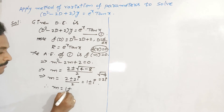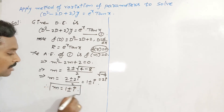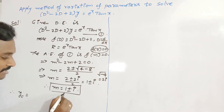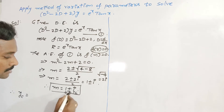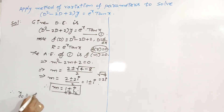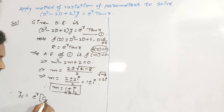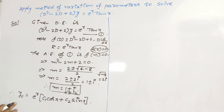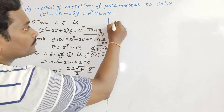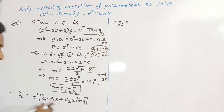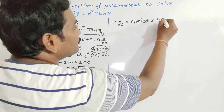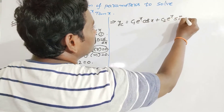Separating the terms: m = 1 ± i, which are complex conjugate roots. The complementary function is yc = eˣ(c₁ cos x + c₂ sin x), which can also be written as yc = c₁ eˣ cos x + c₂ eˣ sin x.